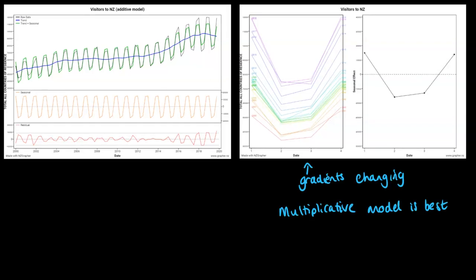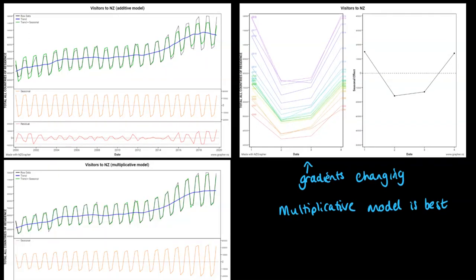On NZGrapher, I've made a multiplicative one for comparison, and here it is below. Now if we just take a first look, we can see that the model, the green line, is fitting the raw data much better now.